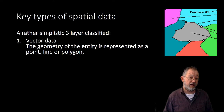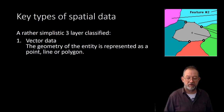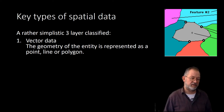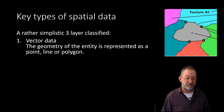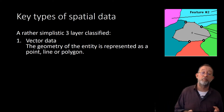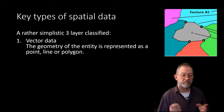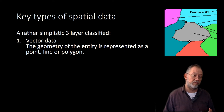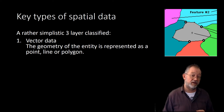Basically, we can talk about three types of spatial data — it's a bit simplistic, there are many more, but let's stick with these three as the most common way of looking at it.